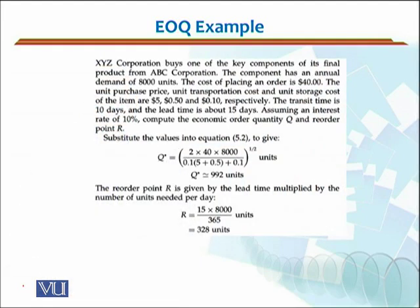Now, let's say we have an XYZ corporation that buys one of the key components of its final product from ABC Corporation. The component has an annual demand of 8,000 units. So, this would be my D.